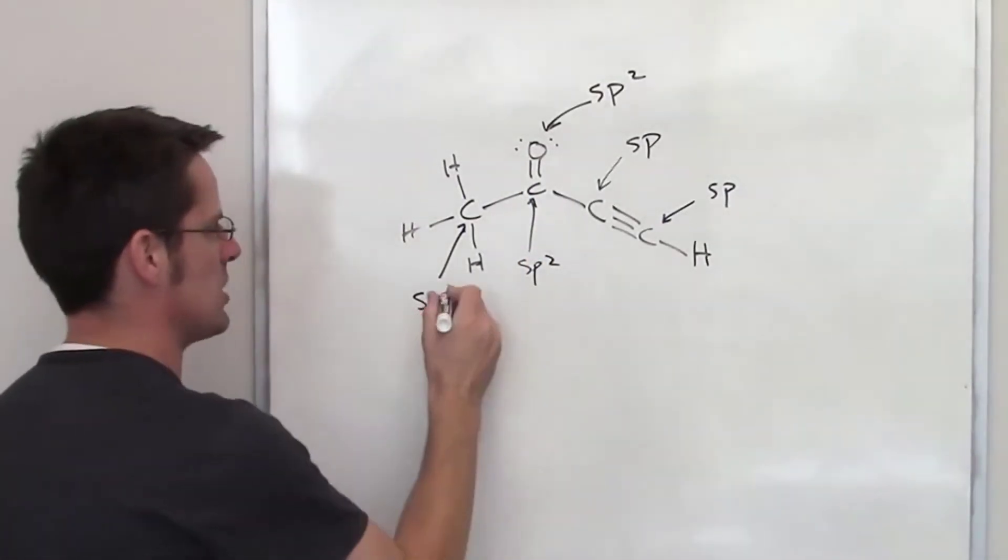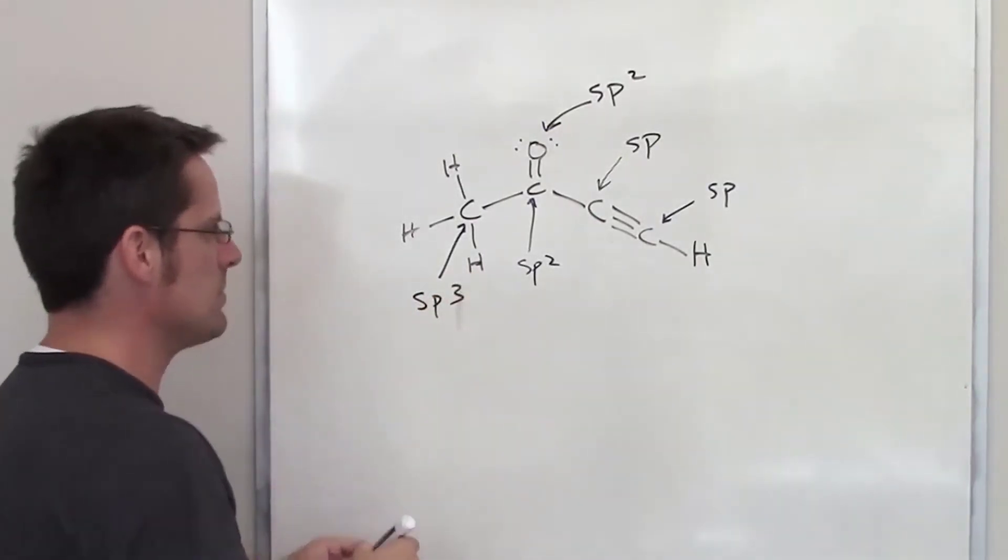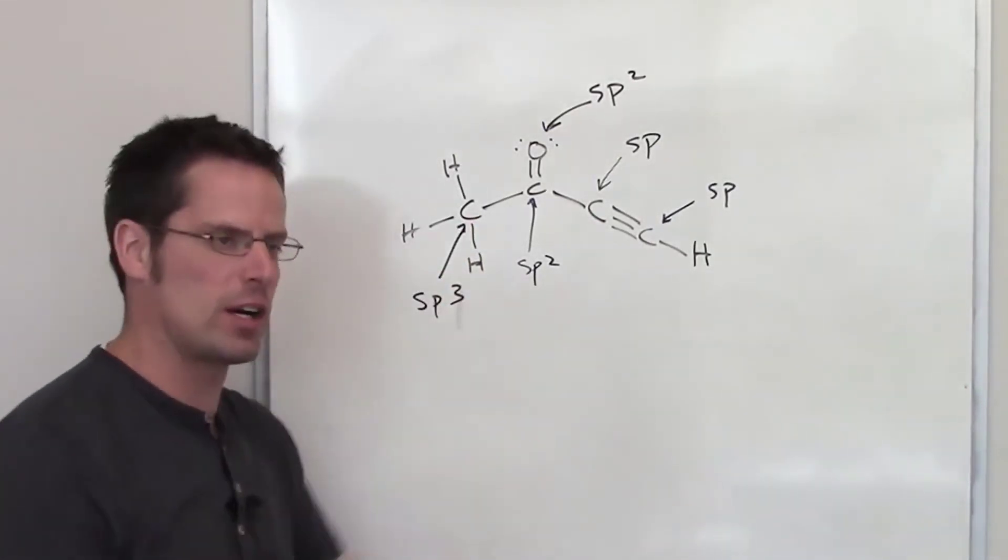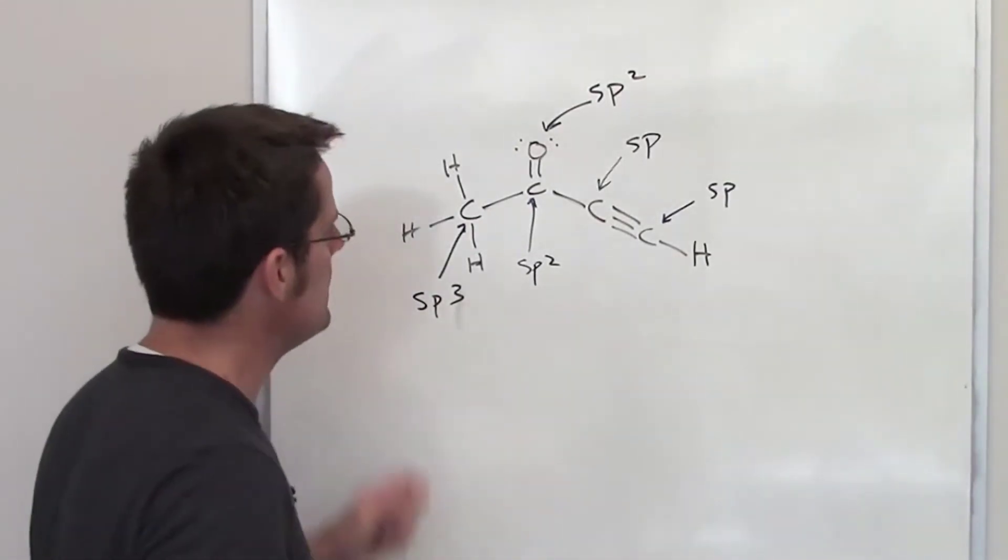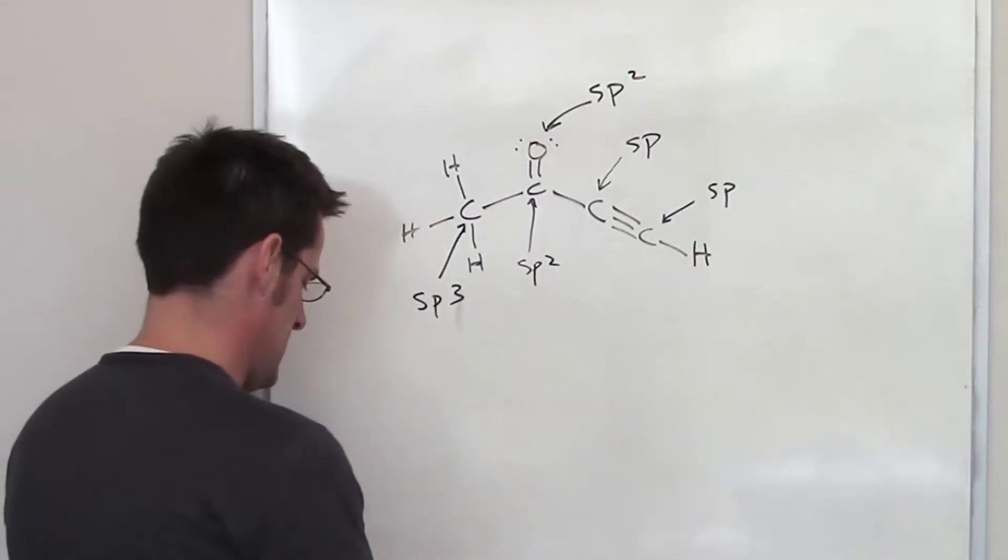we should acknowledge that sp3—I should write that more neatly—sp3 atoms, atoms that have four things around them, are going to try and spread those four things out as far apart as possible. Even though you might look at the way it's drawn on paper and say that looks like a 90 degree bond angle, please, for the love of all that is holy, don't make that mistake. It's not a 90